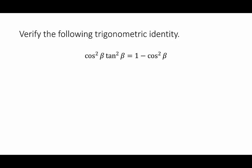Everything is cosine except for tangent, so let's rewrite tangent in terms of cosine. Tangent squared beta becomes sine squared beta over cosine squared beta. Then we can put cosine squared beta over 1, and those end up canceling. Now we have sine squared beta.